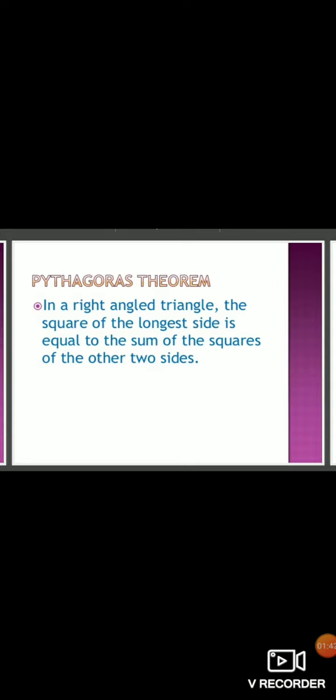...the square of the longest side is equal to the sum of the squares of the other two sides. Like here we have a right angle triangle, so a² plus b² equals c².